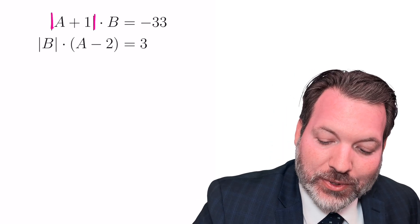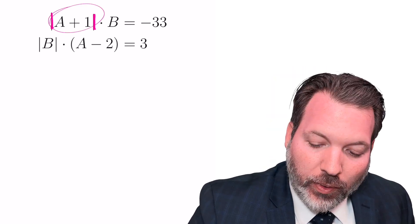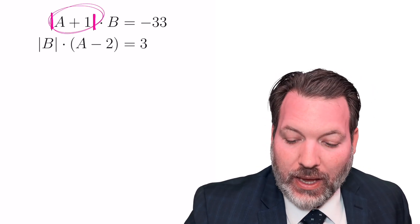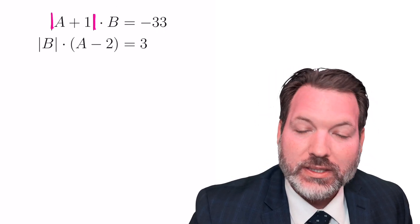What I can say, though, is that the absolute value of a plus 1, whatever a is, must be positive. And the only way to take a positive quantity and multiply by something and get a negative result is if the something we multiplied by was itself negative.